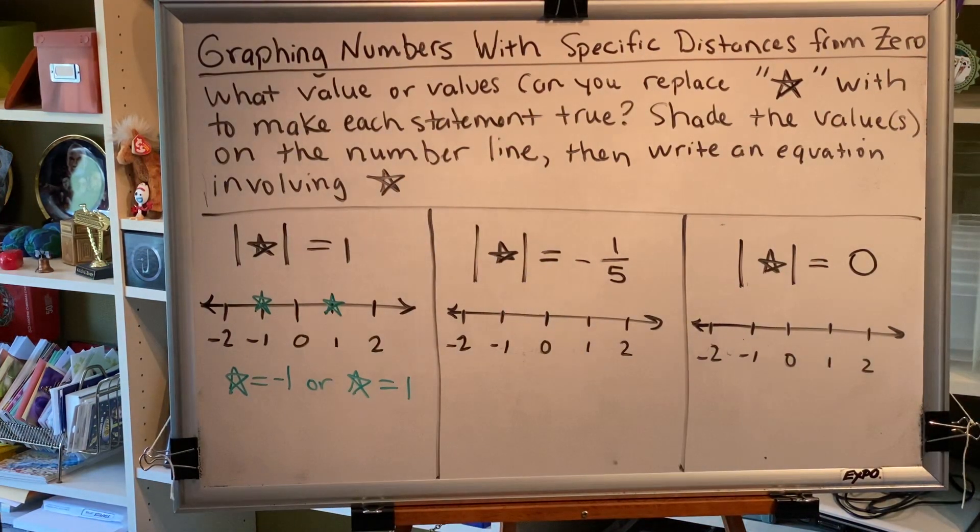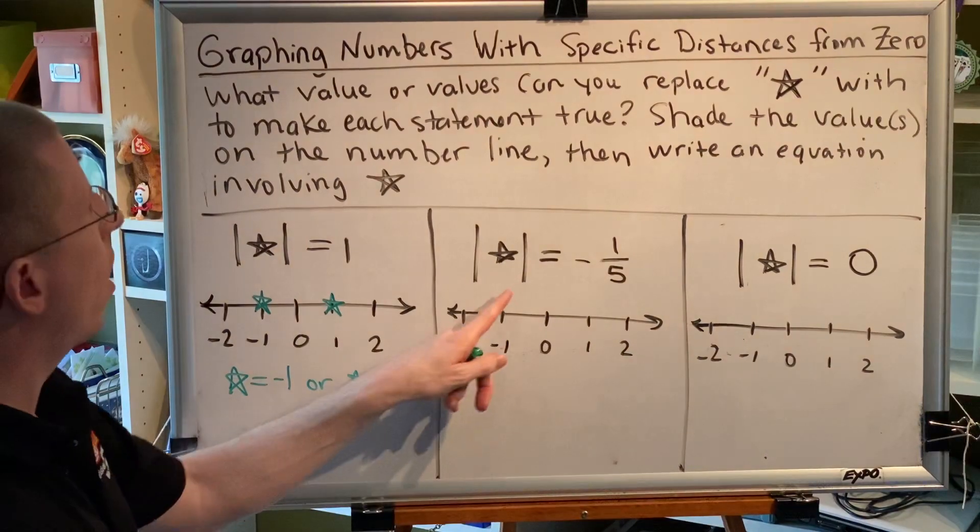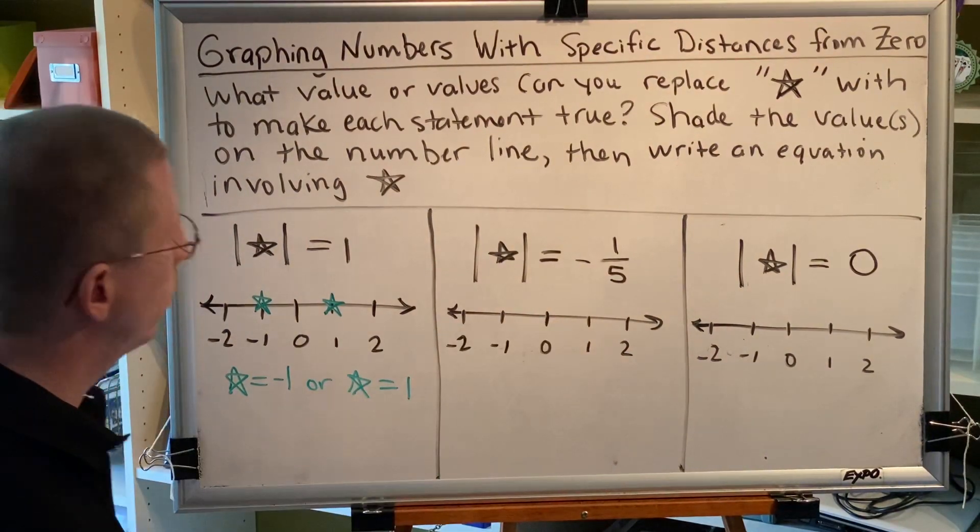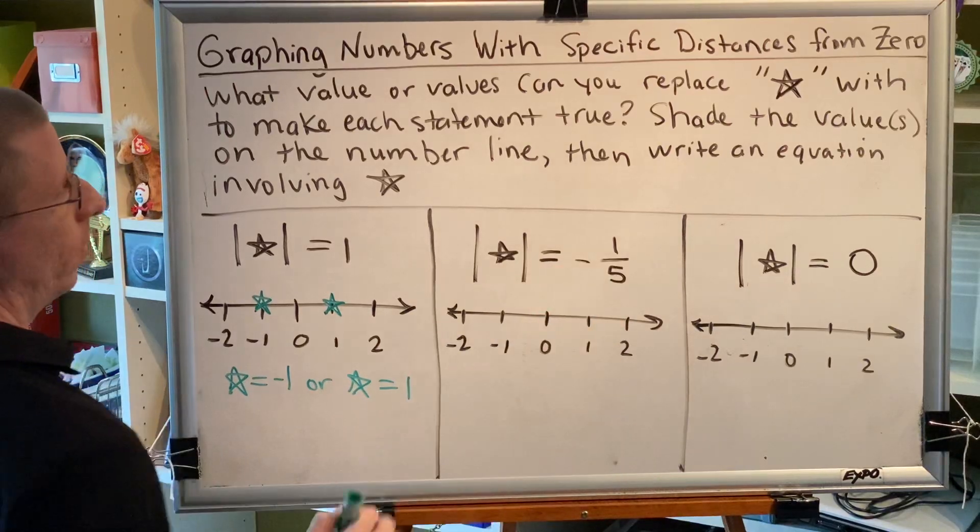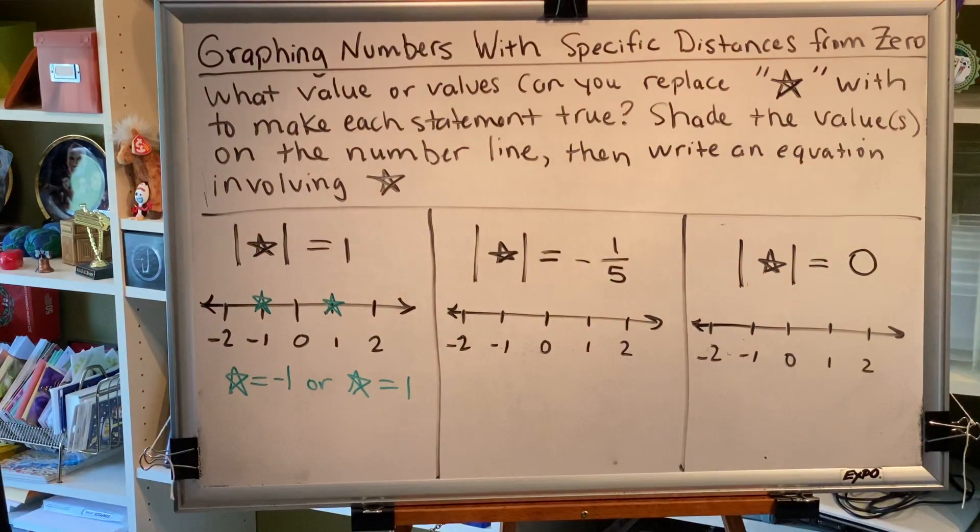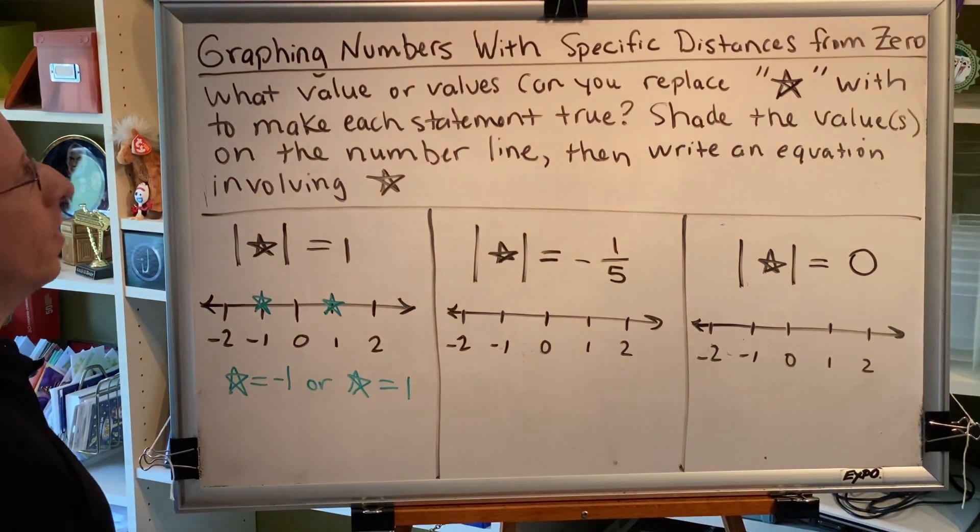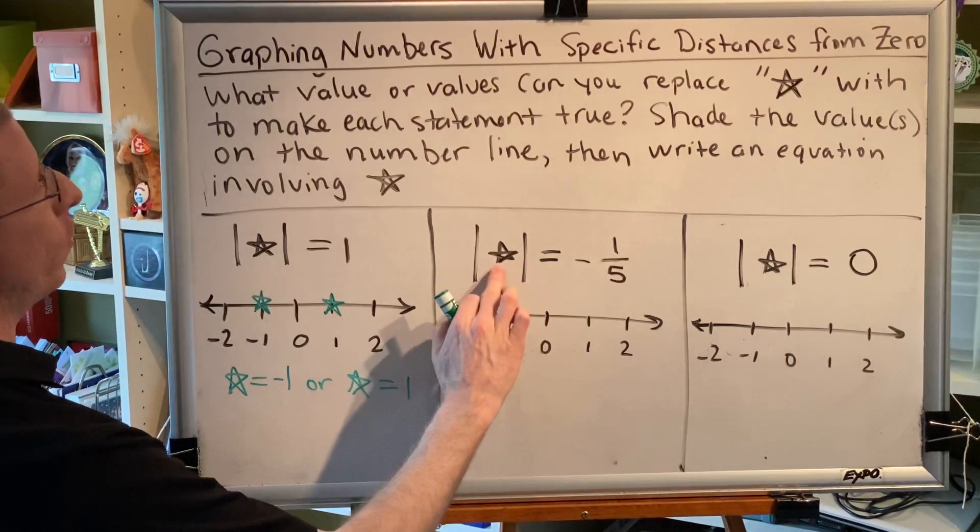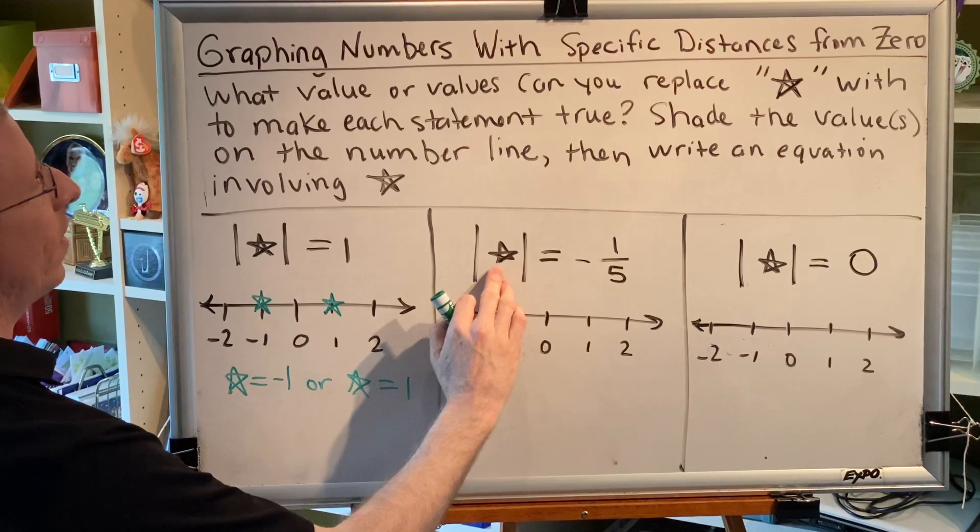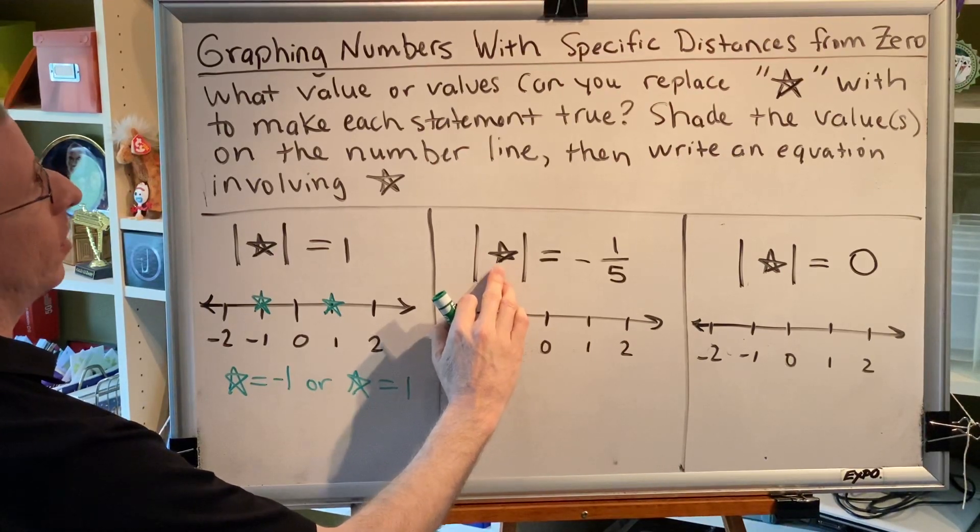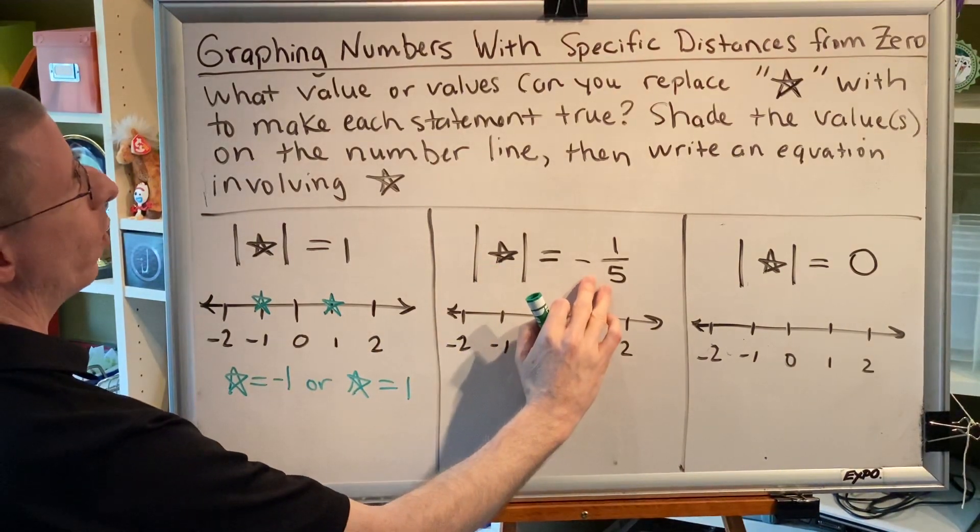Okay, let's look at our next problem. The absolute value of star equals negative 1 fifth. So what number can we put inside here to get this result? The most frequent wrong answer given by students is negative 1 fifth. If you put negative 1 fifth inside the absolute value bars in place of the star, the absolute value of negative 1 fifth is positive 1 fifth. So we won't get this result.